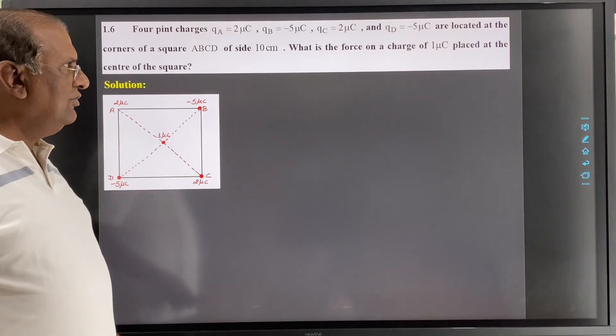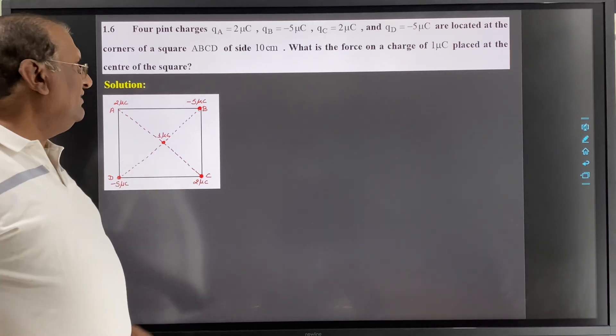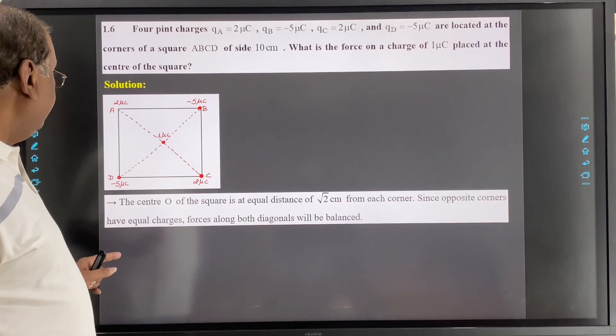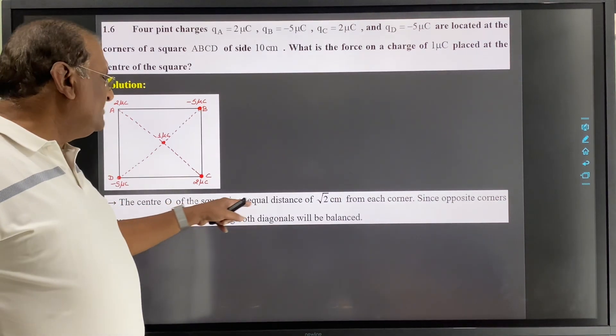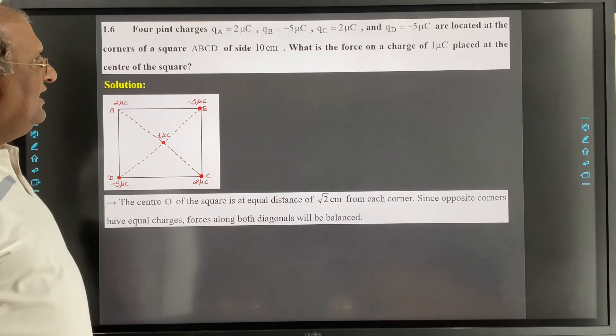So A and C, 2 micro coulomb charge will be equal in magnitude opposite in direction. So the center O of the square is at equal distance of root 2 cm from each corner.